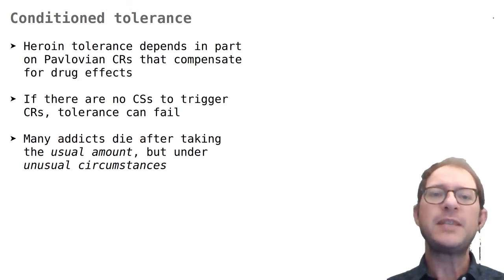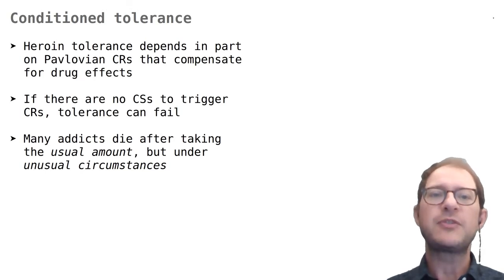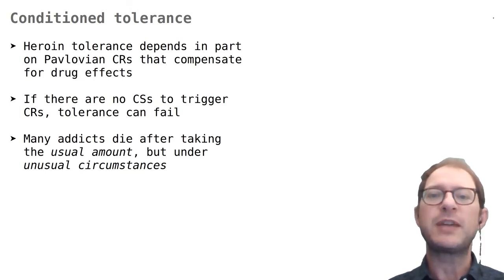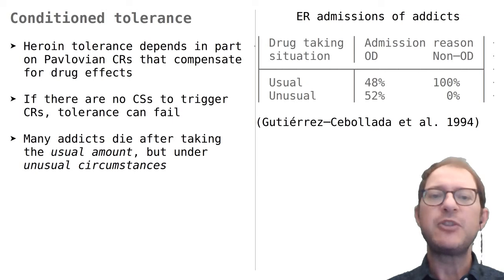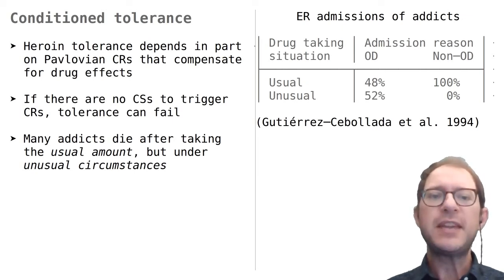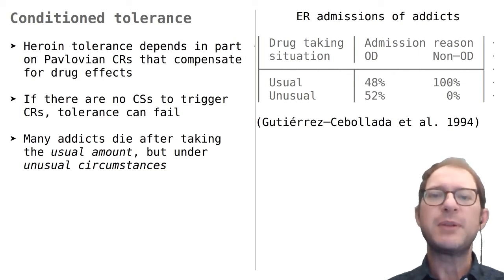In particular, this view of drug tolerance predicts that tolerance can fail if one removes the conditioned stimuli that the brain is using to compensate for drug effects. In fact, there is a lot of evidence that many heroin addicts die after taking a usual amount of the drug, but under unusual circumstances. The idea is that without the usual cues, the brain could not trigger the compensatory response.